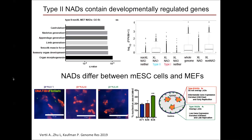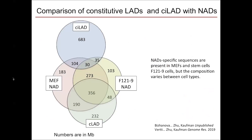Here is FISH data from mouse D3 cells, where Type 2 NADs are no longer associated with nucleoli (shown in red), with the probe in green — in contrast to Type 1 NADs, which remain associated with nucleoli. We then identified NADs in mouse stem cells, F121-9. When we compare MEF NADs and F121 NADs, there is great overlap between the different NADs, but also sequences unique to each cell type. Both cell types have Type 1 and Type 2 NADs, but the sequences vary between cells.